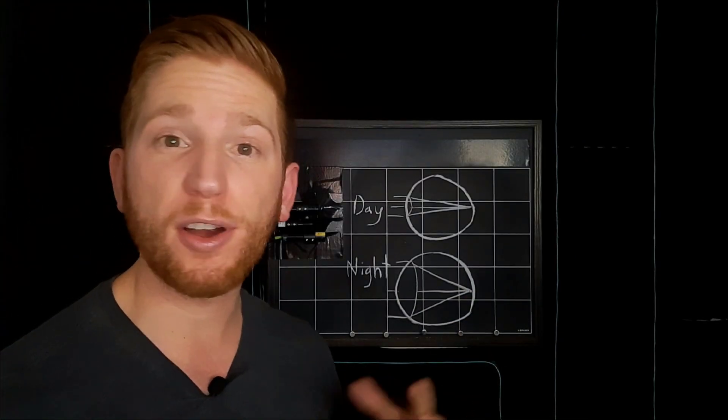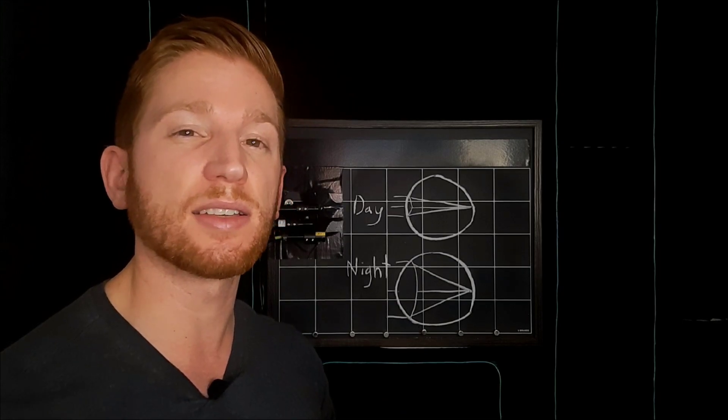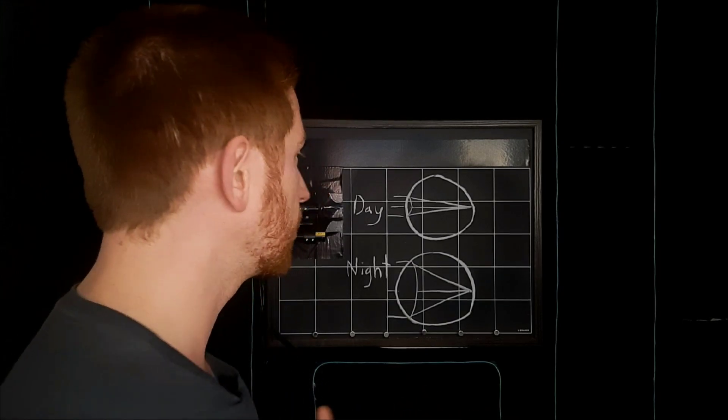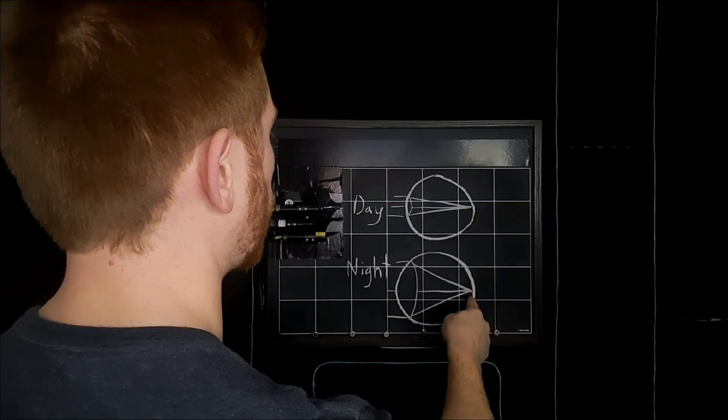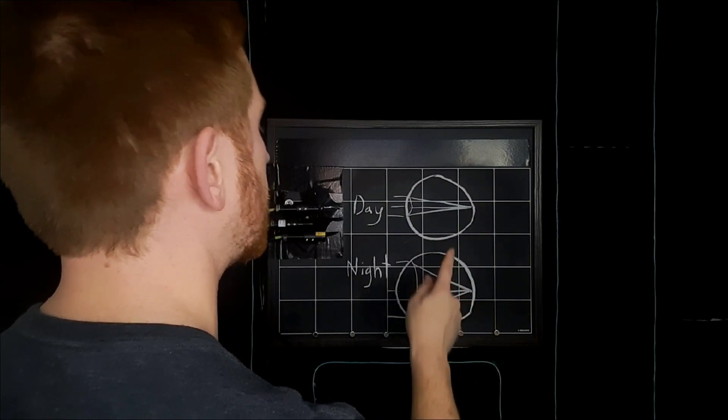So if you have perfect vision, if you don't have astigmatism, it doesn't really matter. Regardless, the light will be focused right onto the retina where it should be in both cases.